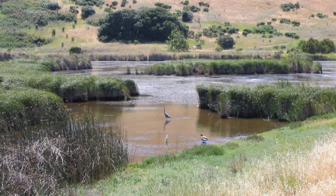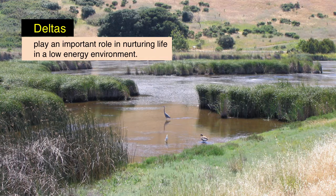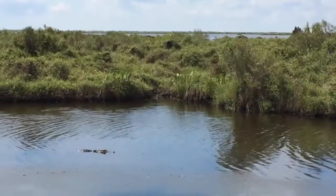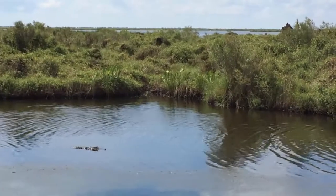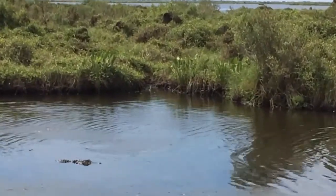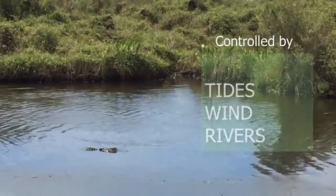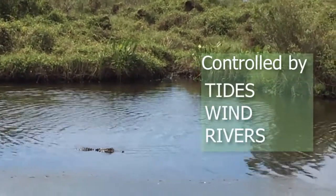Deltas play a huge role in nurturing life on the low-energy coast. They act to preserve the coast, filter water, and provide an environment for young organisms to flourish. The shape of a delta is controlled by tides, wind, or rivers, or any combination of those elements.